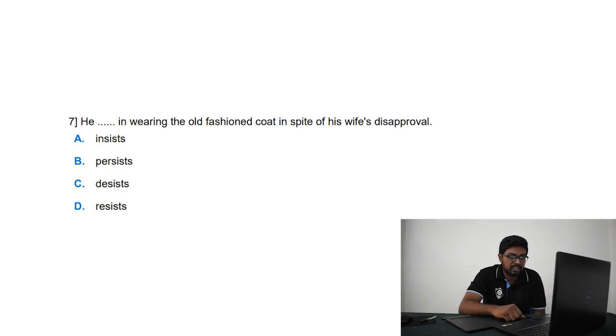He dashed in wearing old-fashioned coat in spite of his wife's disapproval. Basically in English, you have to be well aware with a wide range of words and their meanings. Insist, persist, desist all sound the same but all are very different in meaning. Insist is someone giving you a suggestion. Persist is even though someone doesn't want you to, you still do the same thing. In this question, he is wearing the old-fashioned coat in spite of his wife's disapproval. His wife is not approving it, but still he is wearing it. He is persisting in wearing the same clothes.